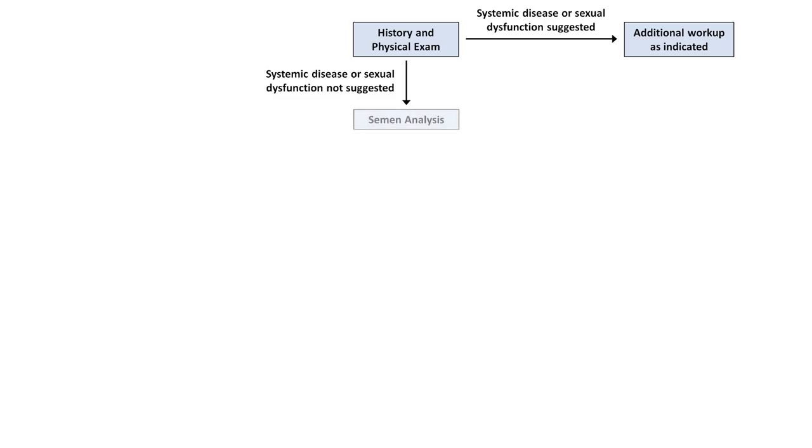Now how can we put all of these questions and tests together into a diagnostic algorithm that we can use on an individual patient? Start with a thorough history and physical exam focusing on those things previously mentioned. If a specific systemic disease, including genetic disease, or sexual dysfunction is already suggested at this point, then pursue additional workup as indicated. On the other hand, if nothing from the history and exam points to a specific direction, the next step is universally semen analysis.